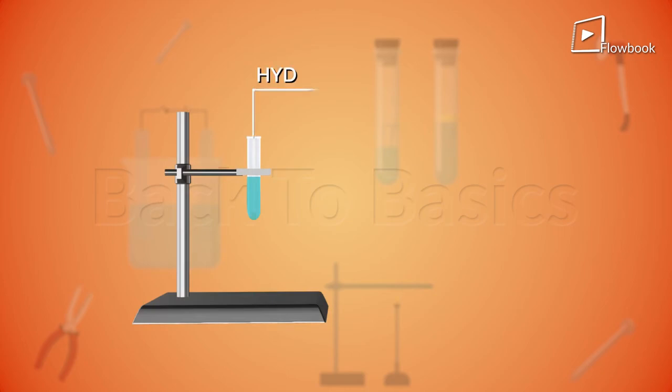Take some hydrochloric acid in a test tube like this and now add some pieces of a metal, say zinc. Now what do you see? You see something is happening, a reaction, and some gas is being evolved.